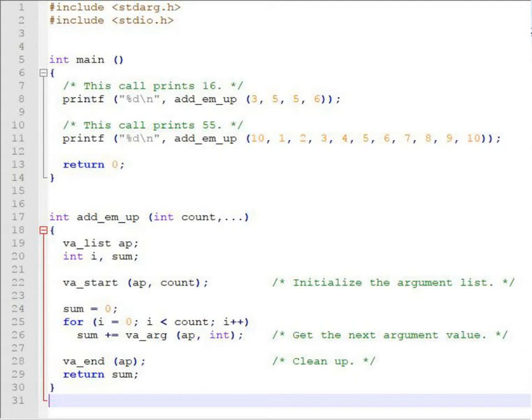Let us see an example of variadic function as a program. In this program in first line I have included a header file called stdarg.h. Now let us go to our user defined function int add underscore em underscore up open parenthesis int count comma ellipsis. Now I have declared ap as a va underscore list type.